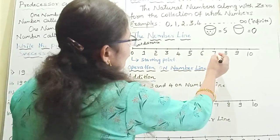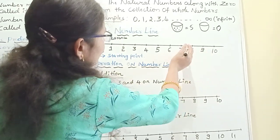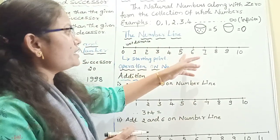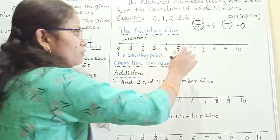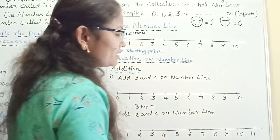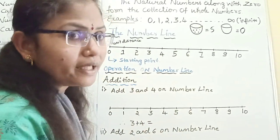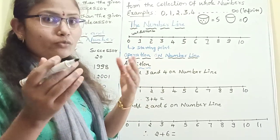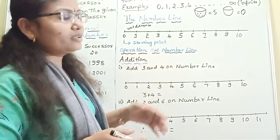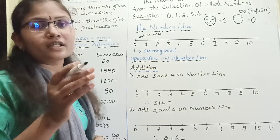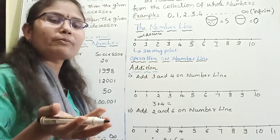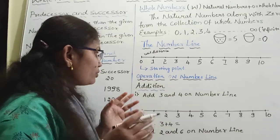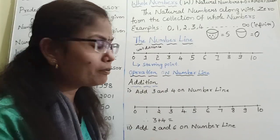You can observe that the right side of the number line is increasing in order, and the left side is in decreasing order. If you go to the right side you get the successor; if you come to the left side you get the predecessor. Now we will move on to operations on the number line — addition, subtraction, multiplication, and division.